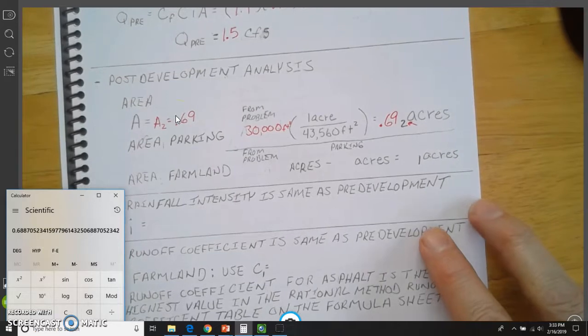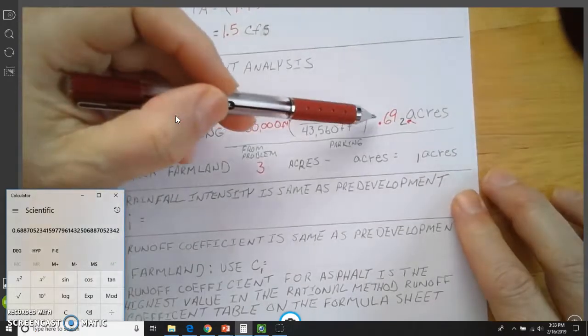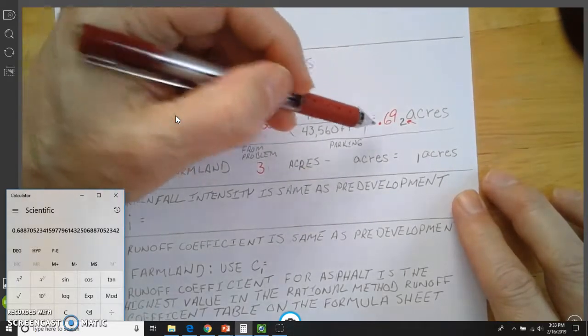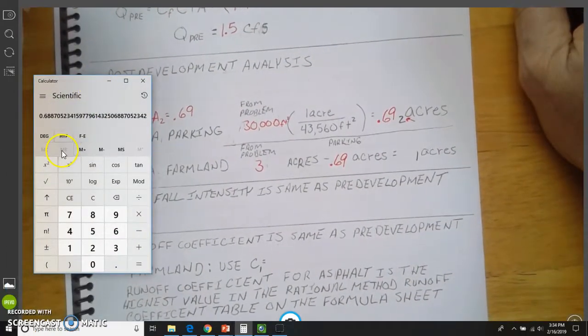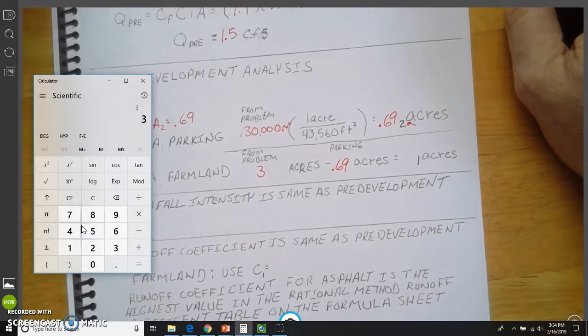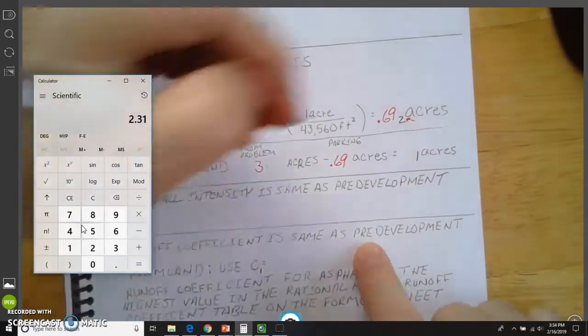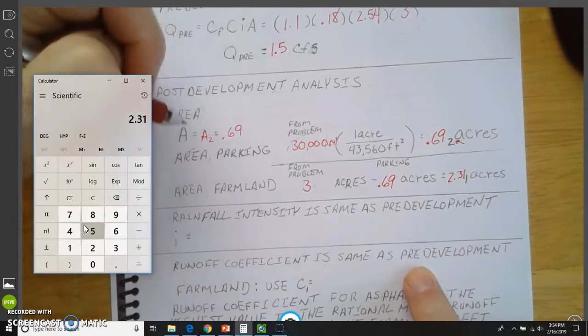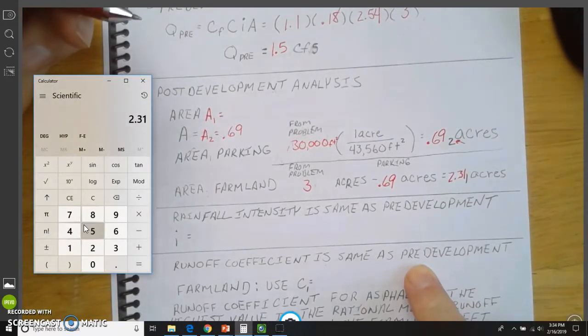Now, from our problem, we know that we have three acres of property. We're going to subtract away the 0.69. We're trying to find out how many acres of farmland we have left. So we're going to subtract away the 0.69. And again, with the calculator, cancel that out. So I'm going to take 3 minus 0.69. And that's going to give me 2.31, 2.31 acres. And once again, just to keep things straight, I'm going to make that A sub 1 equals 2.31.